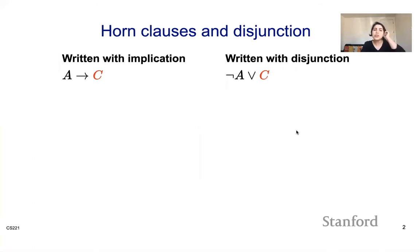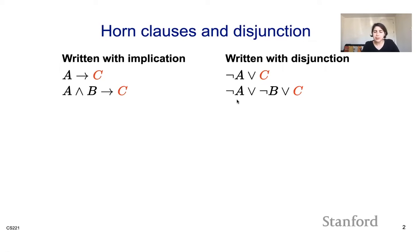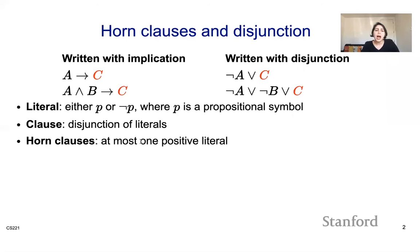Going back, we have A implies C, which we can write as negation of A or C. We have A and B implying C — using De Morgan's law, that gives negation of A or negation of B or C. This is a clause, and it's a horn clause. So to summarize: a literal is a propositional symbol either positive or negative; a clause is a disjunction of literals; and a horn clause is a clause with at most one positive literal.